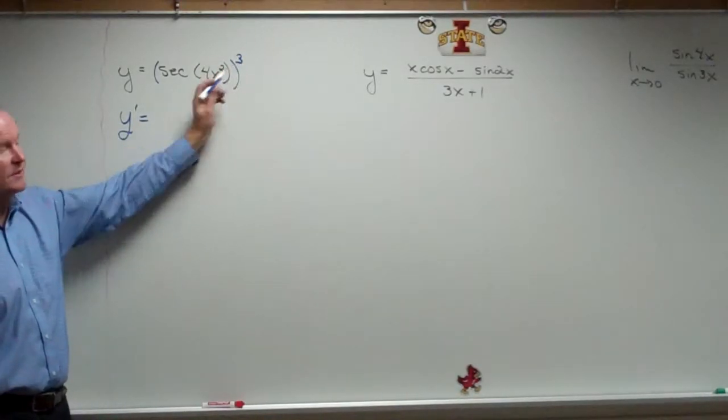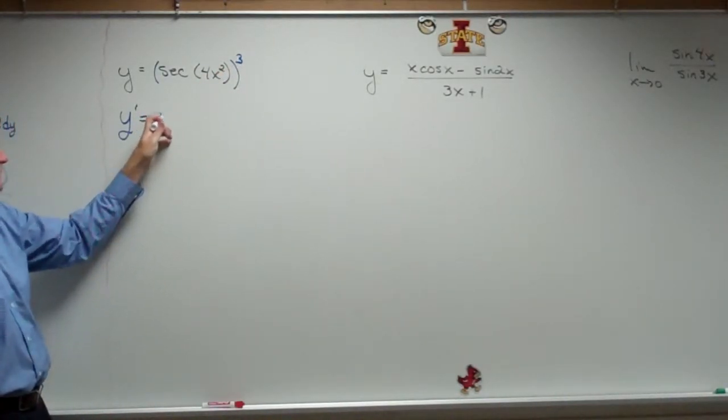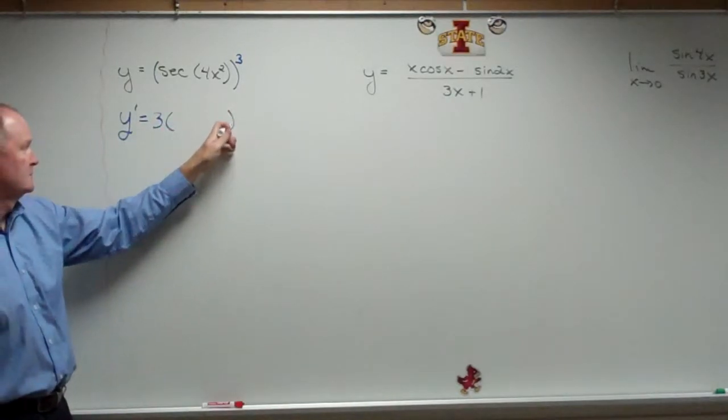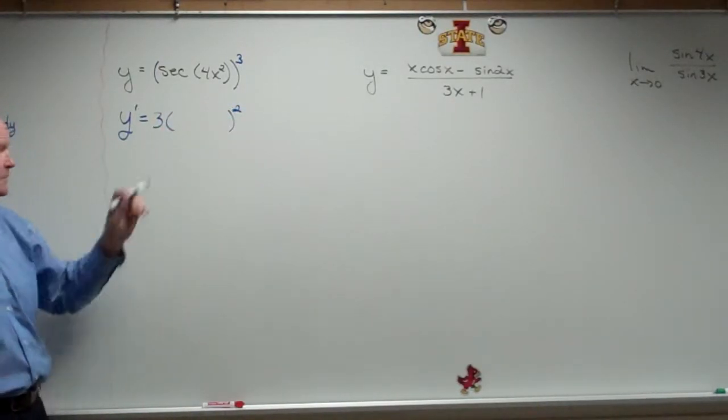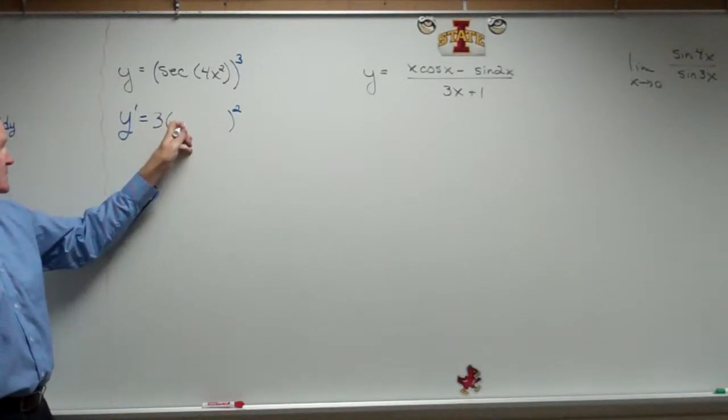So this is the outside, there's the 3, so it comes down out front, becomes a square, the inside stays the same.